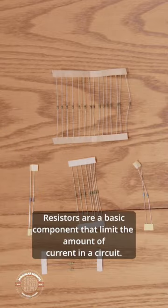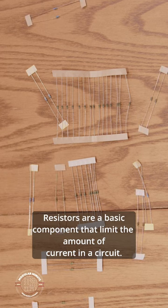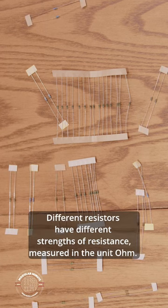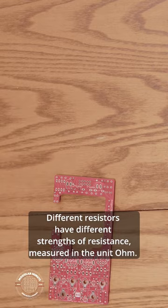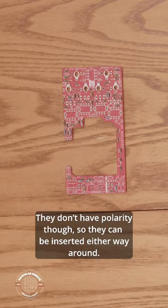Next step, resistors. Resistors are a basic component that limit the amount of current in the circuit. Different resistors have different strengths of resistance, measured in the unit ohm. They don't have polarity though, so they can be inserted either way around.